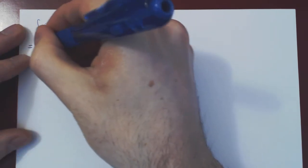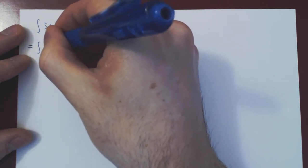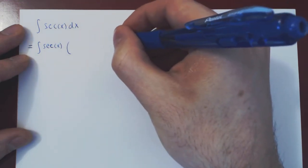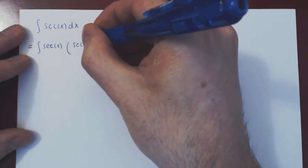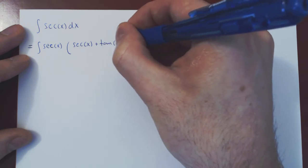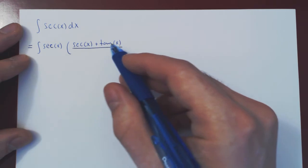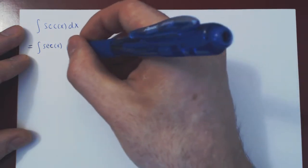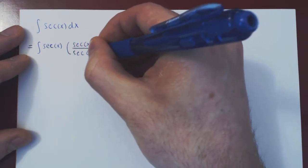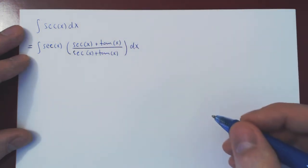The idea is we'll multiply this by 1, but choosing a rather strange 1. So if we multiply the function by 1, it's still secant of x, and we'll choose the 1 to be secant of x plus tangent of x over, well of course, whatever we choose as our numerator, we must pick the same denominator, as this has to be 1, as we cannot change the original function. So we can only multiply by 1. So secant of x plus tan of x over secant of x plus tan of x.